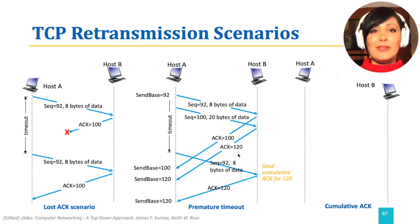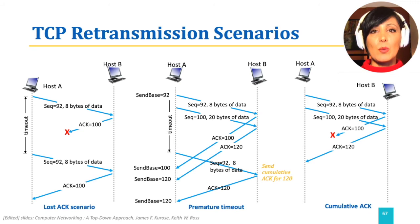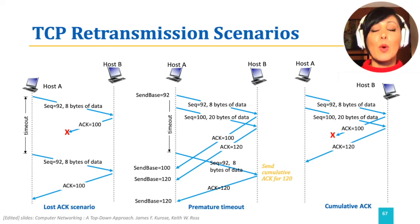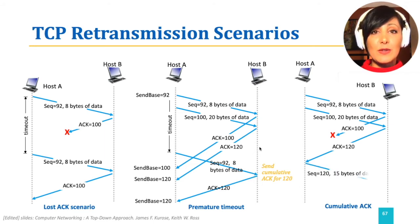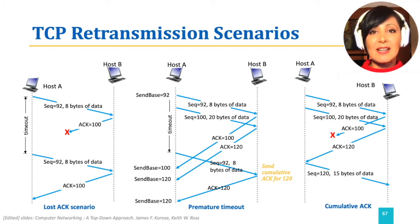In the third scenario, the sender sends two segments: one with sequence number 92 and 8 bytes of data, and the following segment with sequence number 100 and 20 bytes of data. The ACK for 100 is lost, but since the cumulative ACK following acknowledges up to byte 120, host A can infer the receipt of both segments and continue sending data after the cumulative ACK.